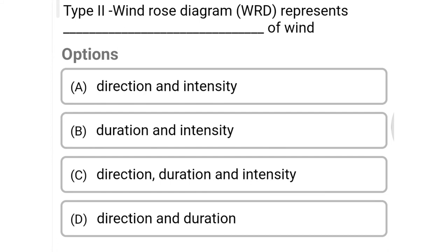Next question: type 2 windrose diagram represents dash of wind — option A direction and intensity, option B duration and intensity, option C direction, duration and intensity, option D direction and duration. The correct answer is option C, direction, duration and intensity.